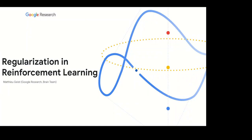It's my great pleasure to introduce Matthew Geist, who will talk about regularization in reinforcement learning. Matthew obtained his PhD from a university called Paul Sabatier in Toulouse, then worked for many years together with Olivier at CentraleSupélec, and more recently he moved to Google Brain in Paris.